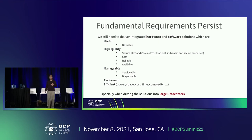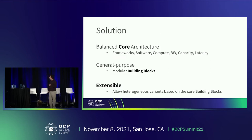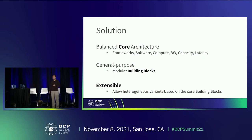Especially when you go to large data centers, efficiency is important. Robustness is important. At scale, debug is very important. The solutions that have been presented are again fundamental. You start with a balanced core architecture. We are working together to come up with general purpose building blocks that we can put together into extensible solutions. With a small number of building blocks, we can build very many systems.